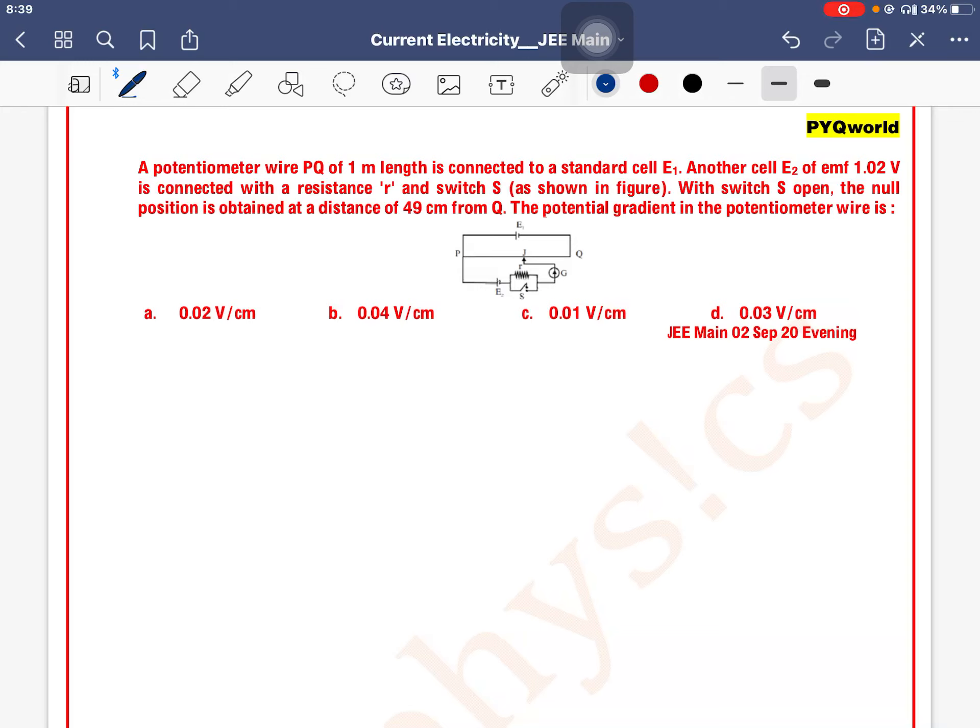A potentiometer wire PQ of 1 meter length is connected to a standard cell E1. Another cell E2 of EMF 1.02 volt is connected with a resistance R and switch S. With the switch S open, the null point is obtained at a distance 49 cm from Q. The potential gradient of the potentiometer wire is...